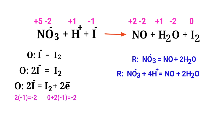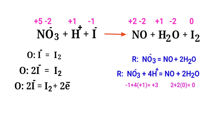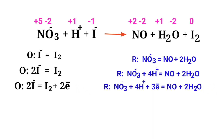Now balance the charges in the reduction half reaction. Both sides are not equal, so add three electrons to the left side to make it equal to zero. Now the charges are balanced in the reduction half reaction.